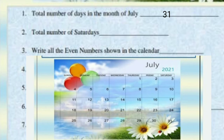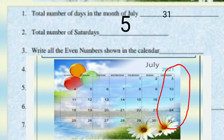Second: total number of Saturdays. How many Saturdays? Count in the calendar: 1, 2, 3, 4, 5 Saturdays.